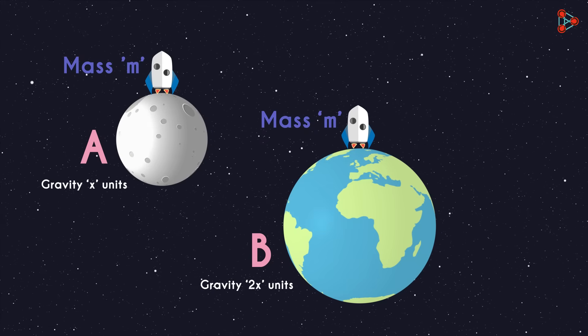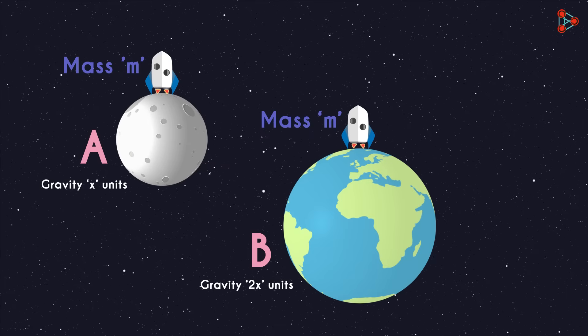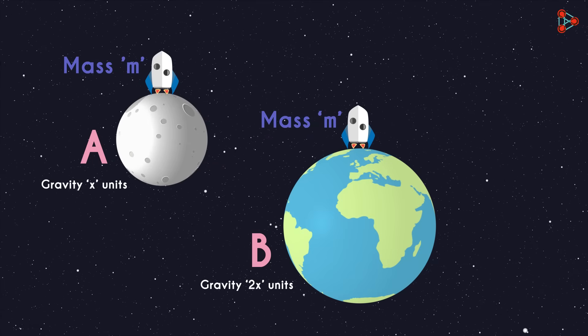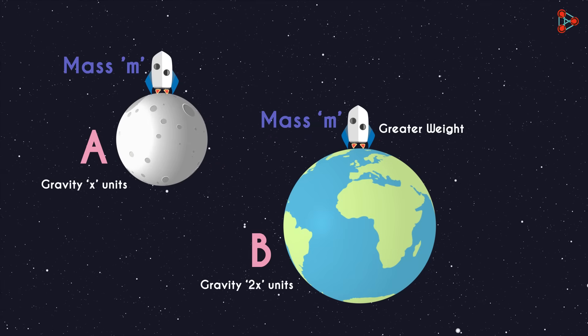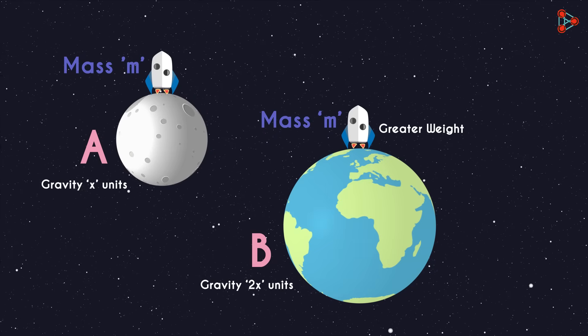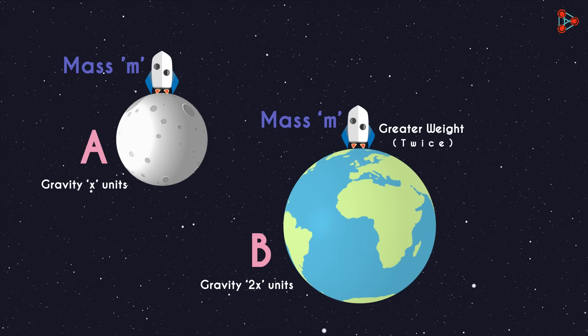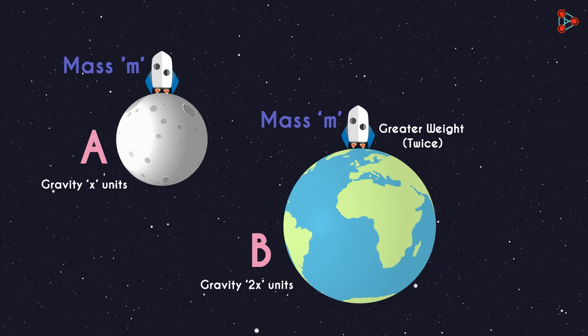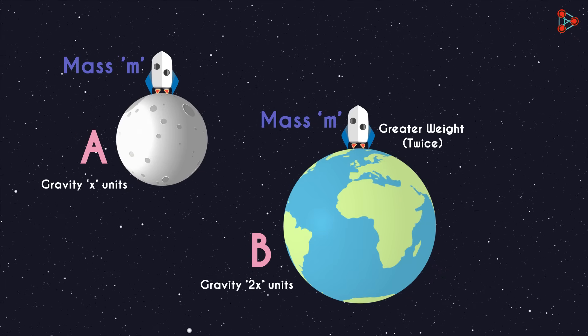The mass of the object will be M at both the places. But the weight of the object will be greater at place B because the pull of gravity is stronger. As the gravity is twice as bigger, the weight of the object will be twice as much at place B as compared to place A.